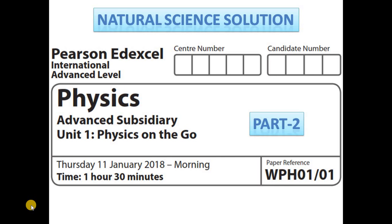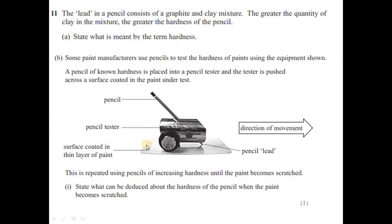Hi, welcome to the video solution for an Excel Physics past paper. This is IEL Physics Unit 1 January 2018 Part 2. Let's start with question number 11. The lead in a pencil consists of graphite and a clay mixture.